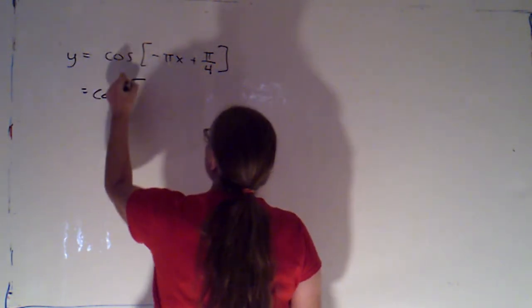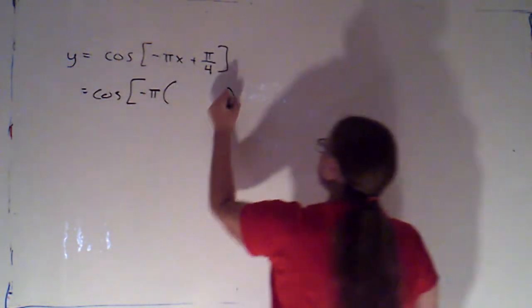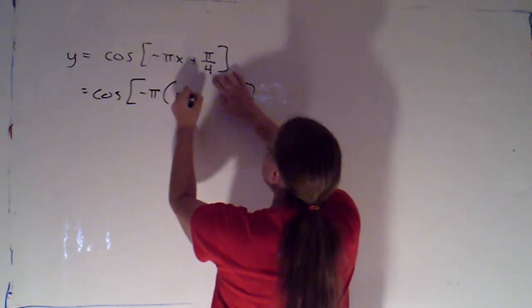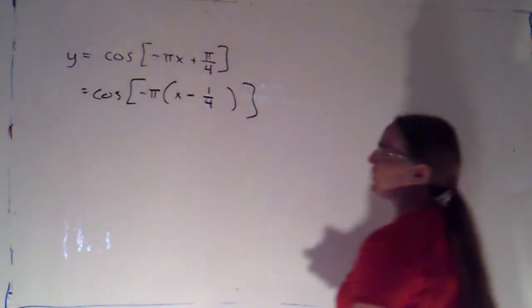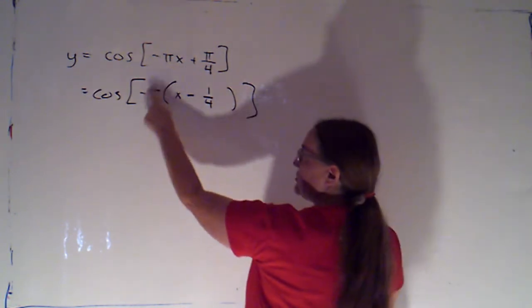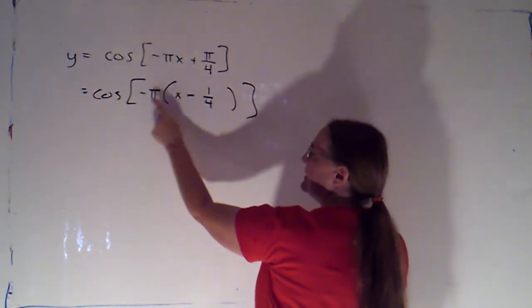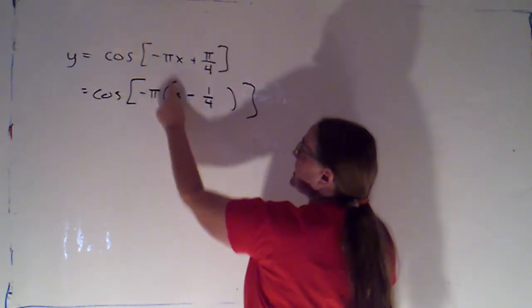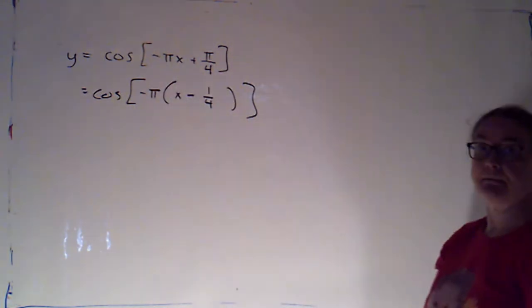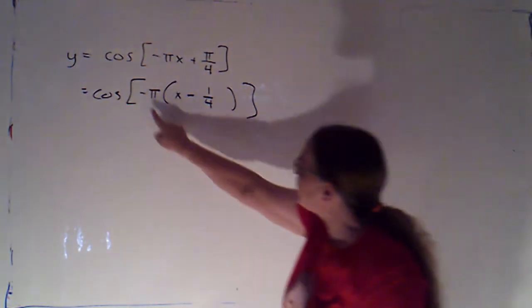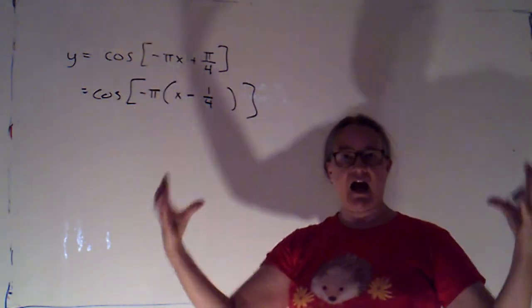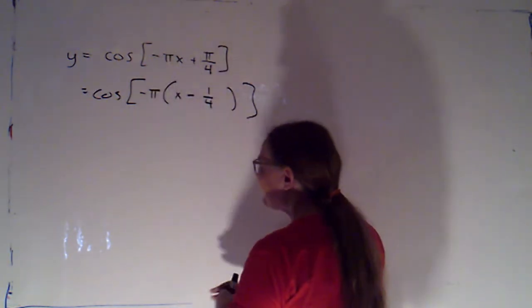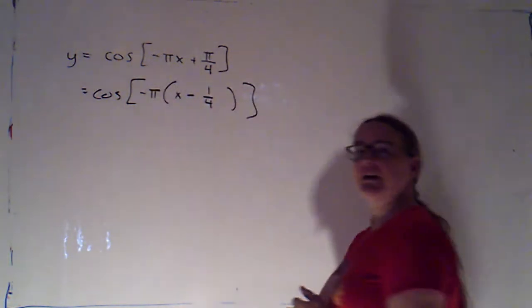I'm going to say this is cosine of negative pi times the quantity x minus 1 fourth. Quick check, if I distribute that negative pi, negative pi times negative 1 fourth would give me back the pi over 4. And of course, negative pi times x gets me back to the negative pi x. But now, that negative sign applies to the entire input to cosine. The input is the opposite of pi times x minus pi over 4.